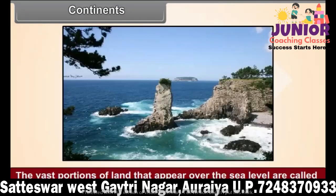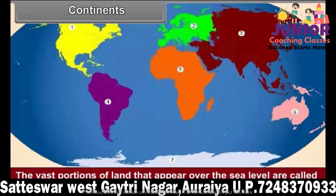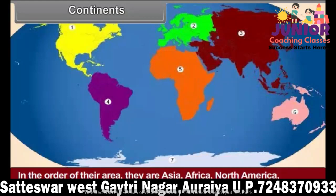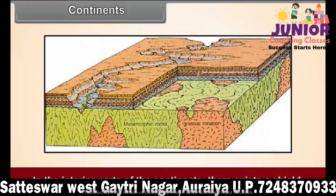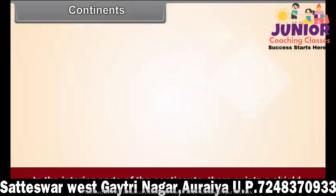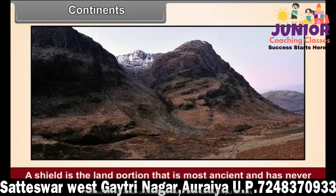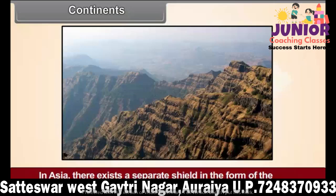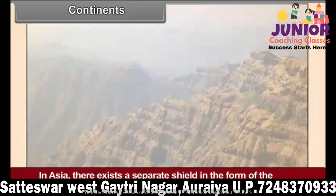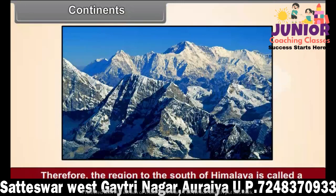Continents. The vast portions of land that appear above sea level are called continents. In all, there are seven continents on the Earth. In order of their area, they are Asia, Africa, North America, South America, Antarctica, Europe, and Australia. In the interior parts of the continents, there exists a shield — the land portion that is most ancient and has never been under the sea. In Asia, there exists a separate shield in the form of the Deccan Plateau of India. Therefore, the region to the south of the Himalayas is called a subcontinent — the Indian subcontinent.